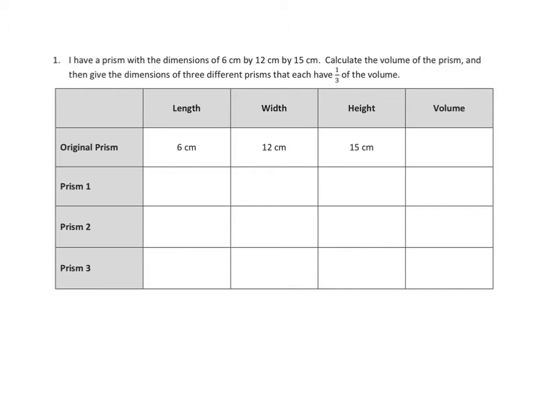So let's take a look at one of our problems from tonight's homework. There's only two problems on tonight's homework, and problem one is multi-part. So I'm just going to do one part of problem number one. I have a prism with the dimensions 6 centimeters by 12 centimeters by 15 centimeters. Calculate the volume of the prism, and then give the dimensions of three different prisms that each have one-third of the volume.